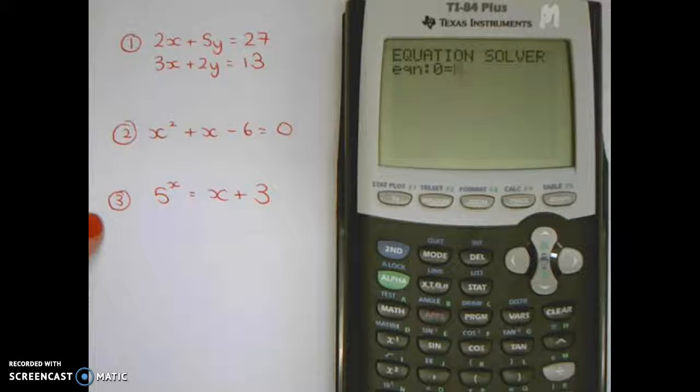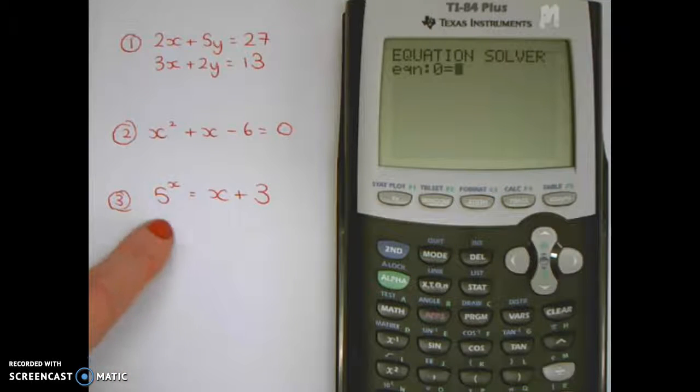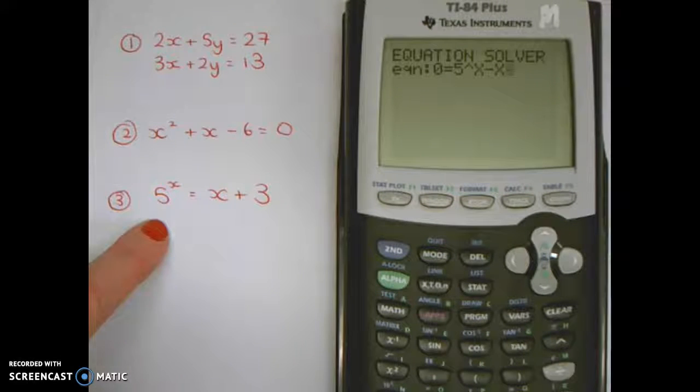You can then type in what we want this to be. We want to solve zero equals. Now we need to rearrange this to zero equals. So zero equals five to the power of x minus x minus three.